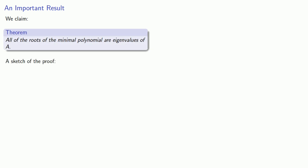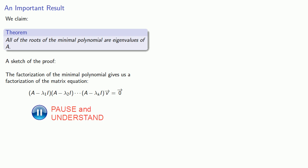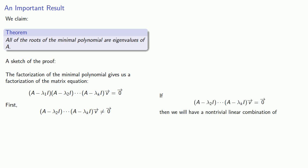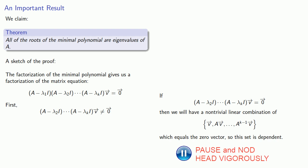Here's a quick sketch of the proof. The factorization of the minimal polynomial gives us a factorization of the matrix equation. And the first thing we note here is that this product consisting of the last few factors with v can't be the zero vector. And the reason is that if it is, then we'll have a non-trivial linear combination of the vectors v through ak minus 1 v, which equals the zero vector. So this set is dependent. But we assume that k was the least value for which such a set would be dependent.